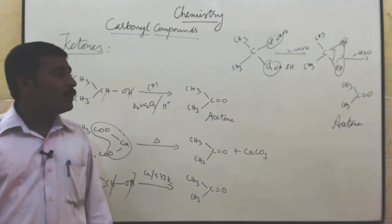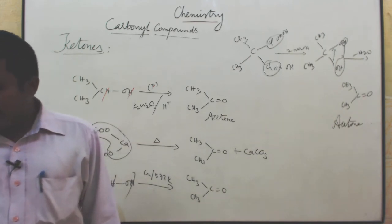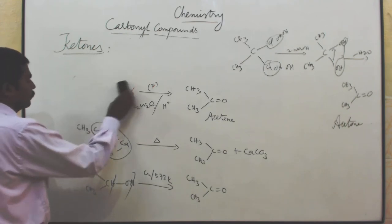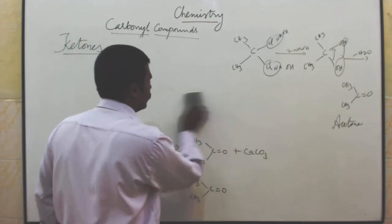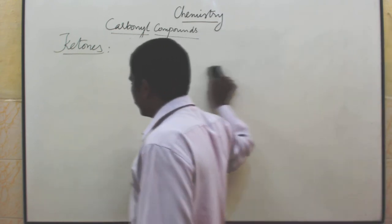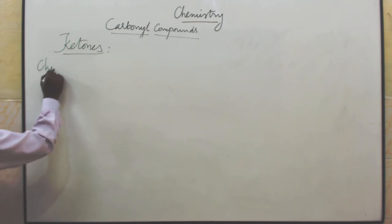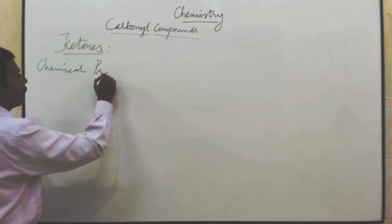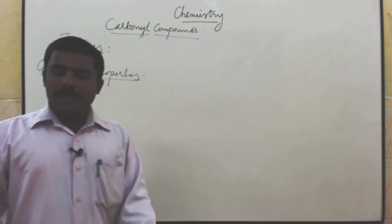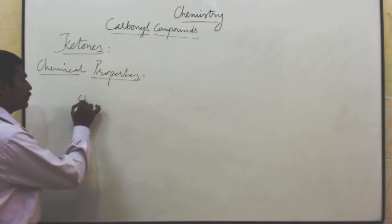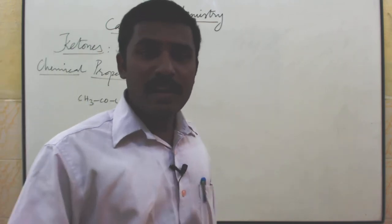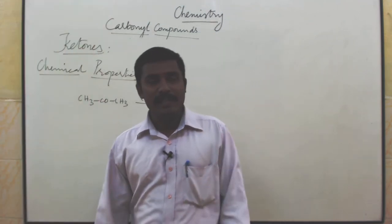Acetone is the product. These are the possible ways to prepare ketones. Next: chemical properties of ketones. First one is ketone undergoes oxidation reaction. Ketone like acetone, CH3COCH3, undergoes oxidation reaction. Primary alcohol undergoes oxidation giving aldehyde; aldehyde further undergoes oxidation giving carboxylic acid.